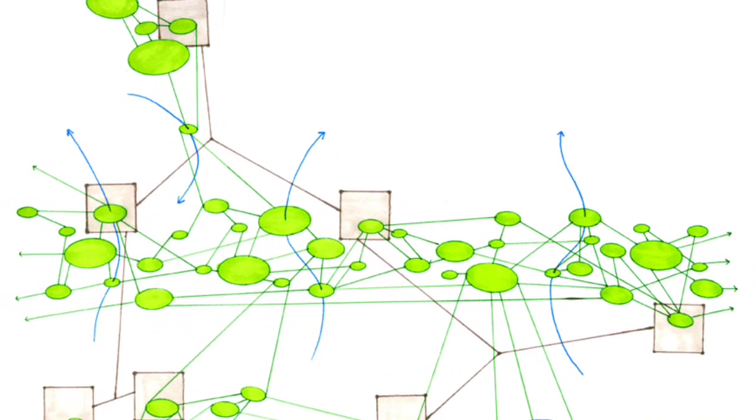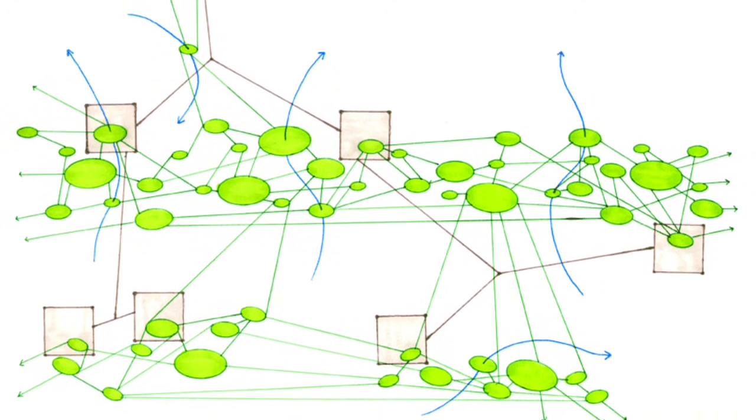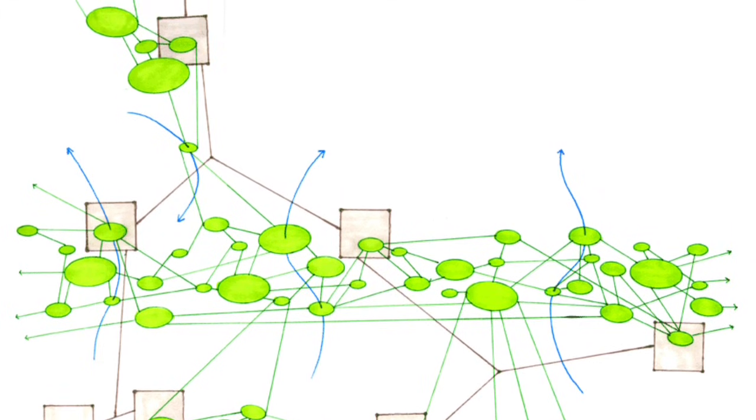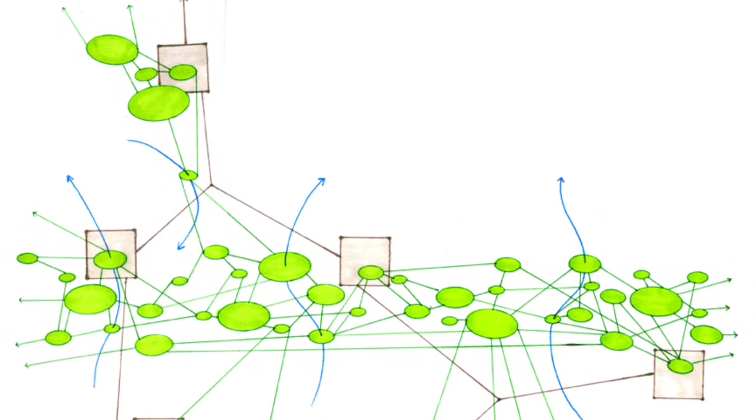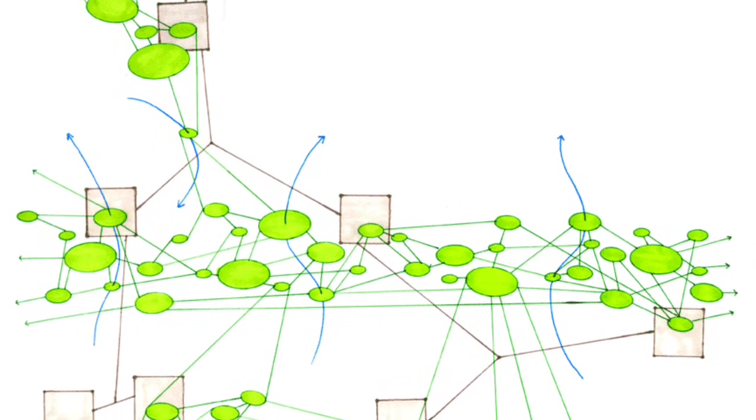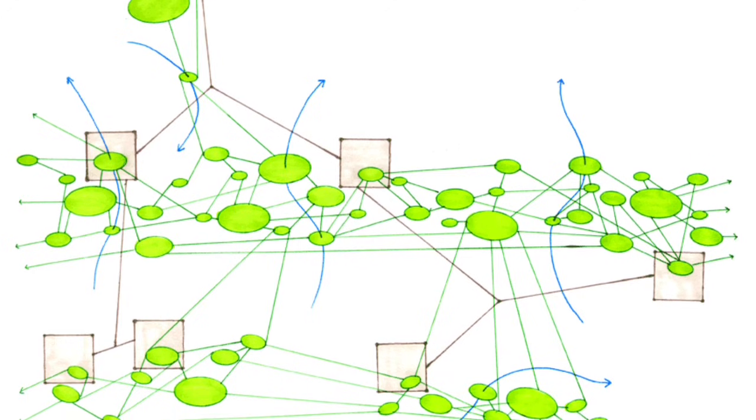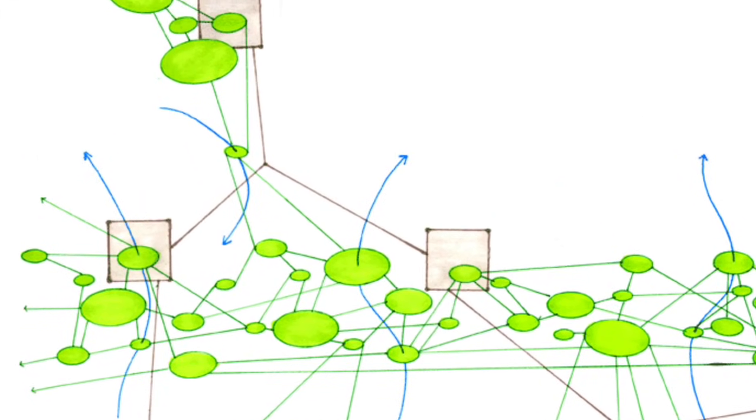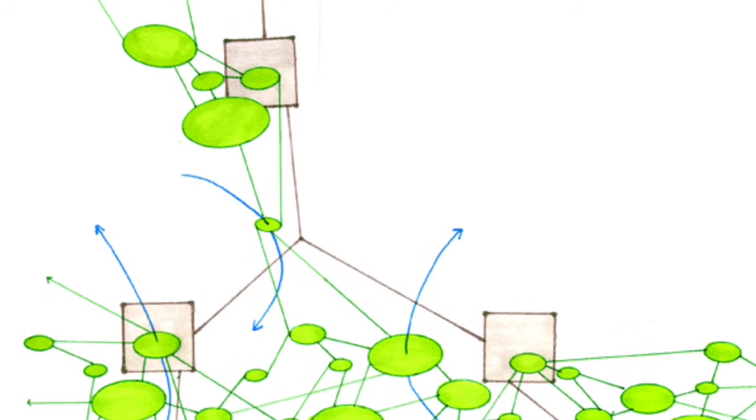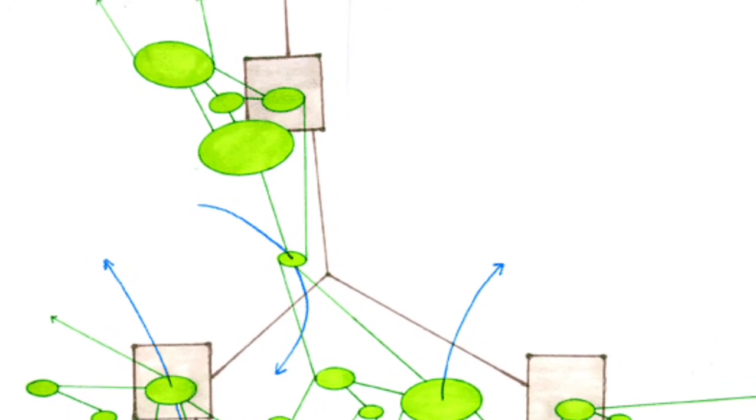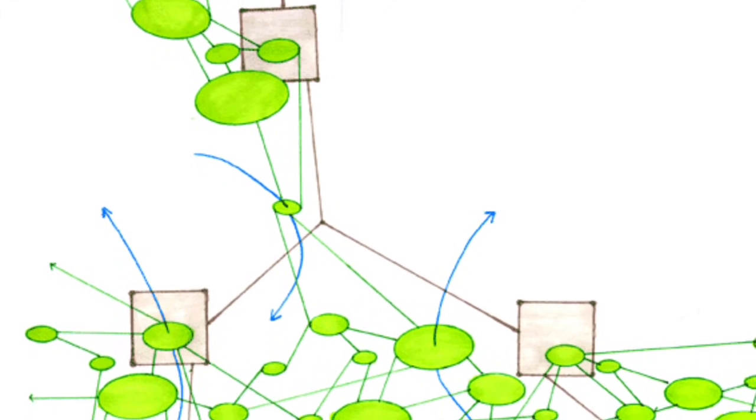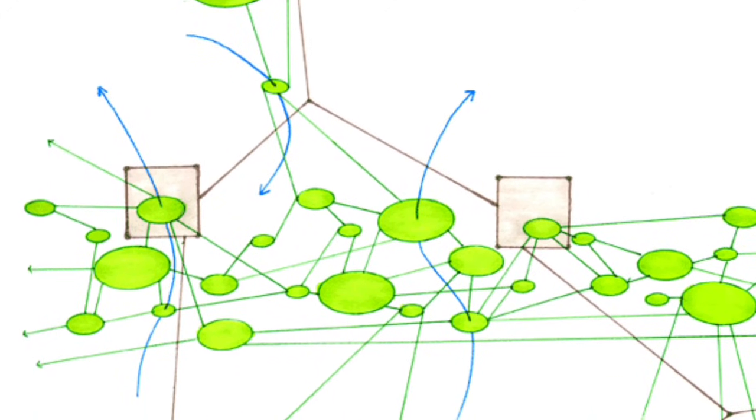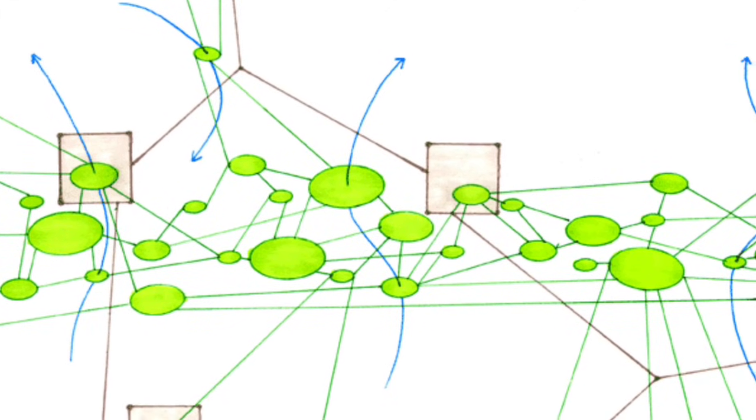Have we not, however, reverted to a simple dualism by contrasting maps to tracings as good and bad sides? Is it not the essence of the map to be traceable? Is it not the essence of the rhizome to intersect roots and sometimes merge with them? Does not a map contain phenomena of redundancy that are already like tracings of its own? Does not a multiplicity have strata upon which unifications and totalizations, massifications, memetic mechanisms, signifying power takeovers, and subjective attributions take root? Do not even lines of flight, due to their eventual divergence, reproduce the very formations their function it was to dismantle or outflank? But the opposite is also true. It is a question of method. The tracing should always be put back on the map.